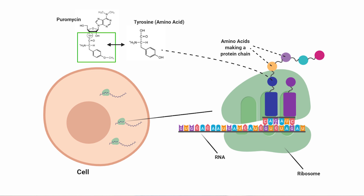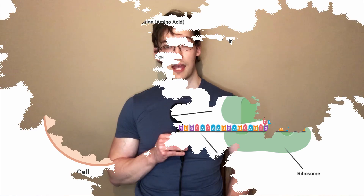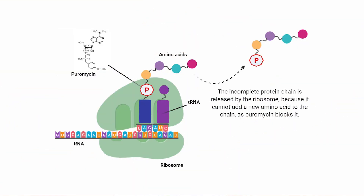Because we've added it to the liquid nourishing the cells, the cell's ribosomes — responsible for protein synthesis — begin incorporating puromycin instead of tyrosine into the cell's proteins. However, although puromycin and tyrosine are structurally similar, they have one key difference — otherwise they'd be the same molecule. And that difference is that puromycin cannot be cut to allow a following amino acid to be added to the amino acid chain.